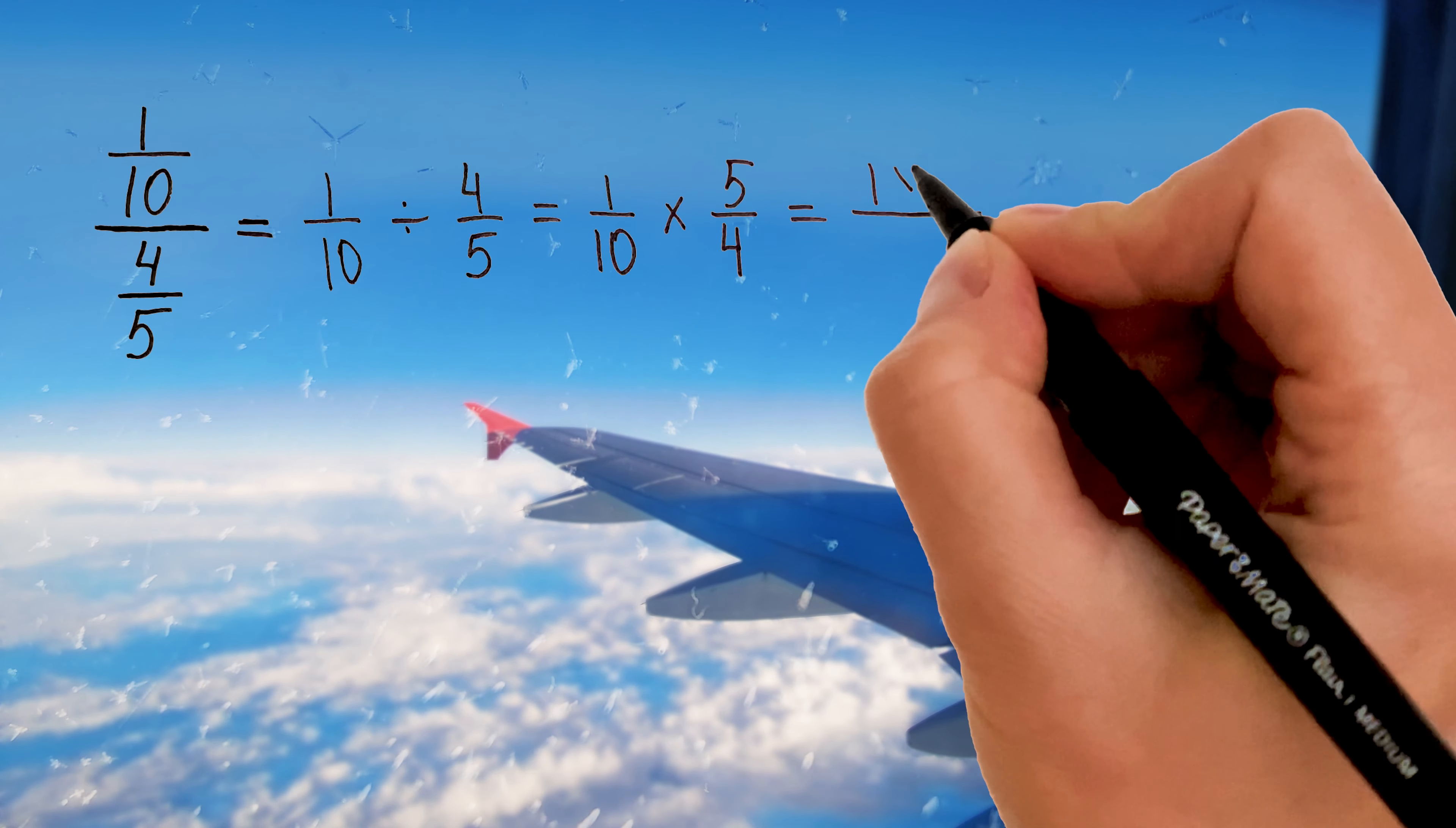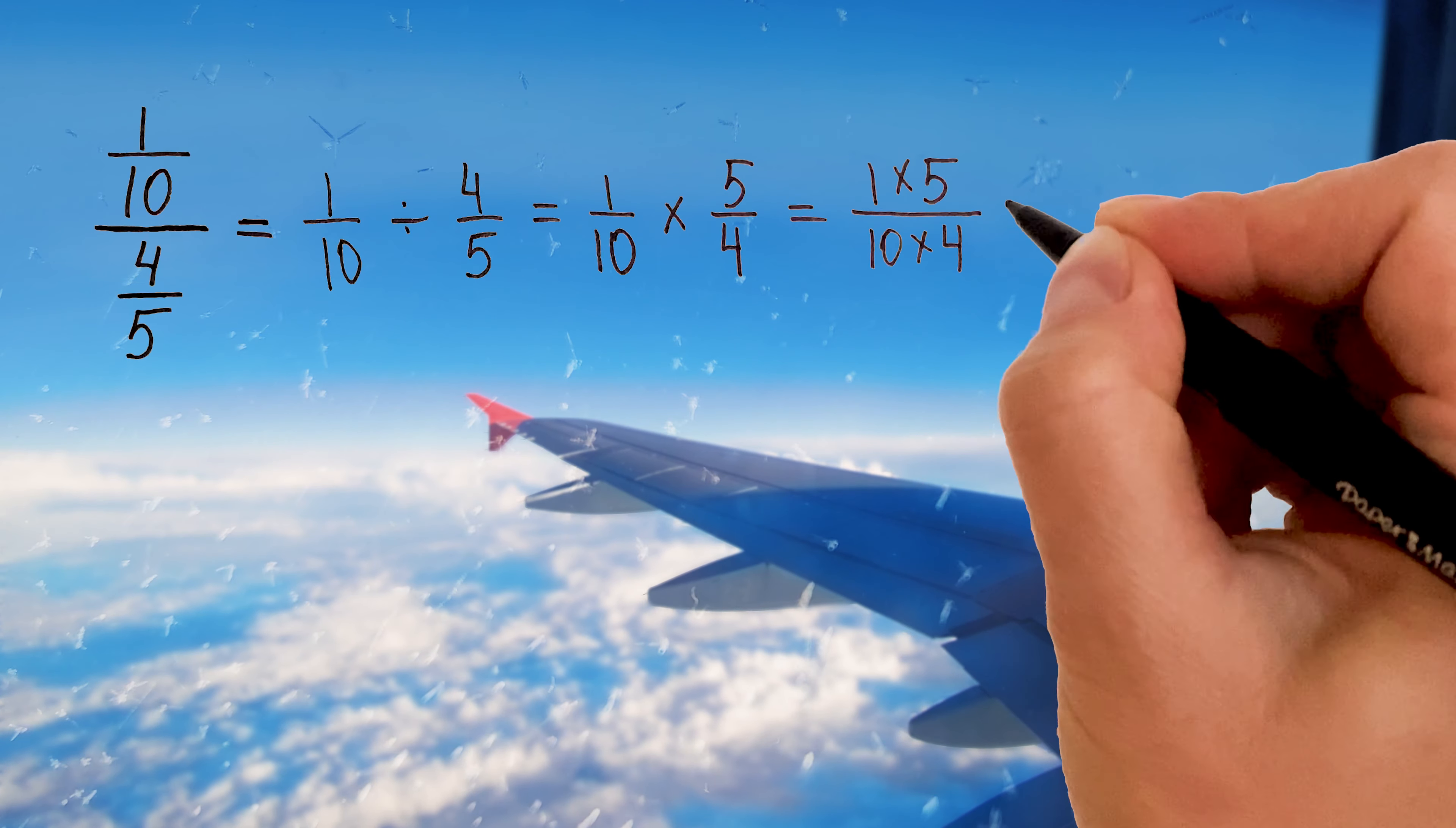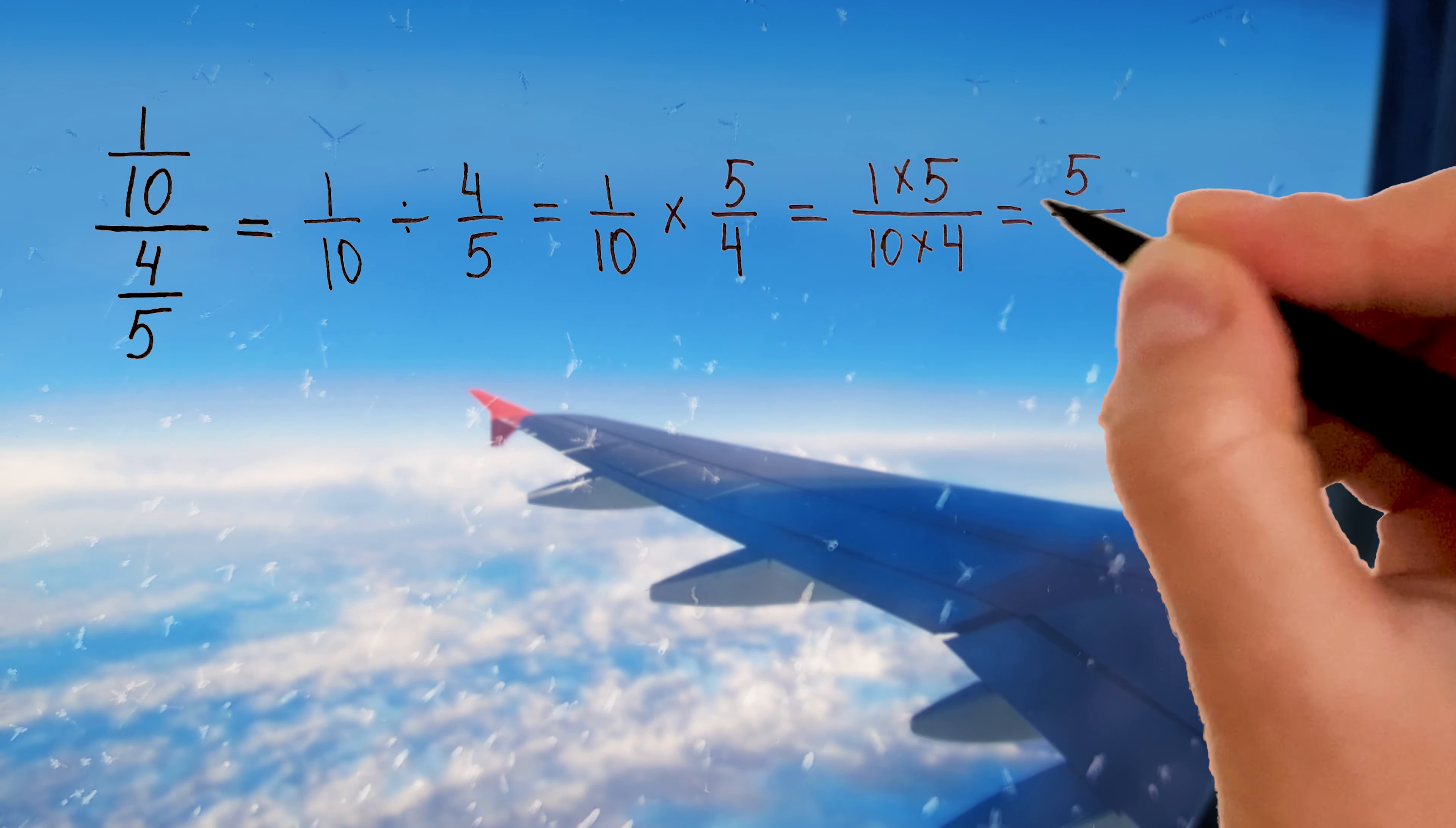Here is our fraction bar, which means division. We are dividing one-tenth by four-fifths. Let's write it down. One-tenth divided by four-fifths.